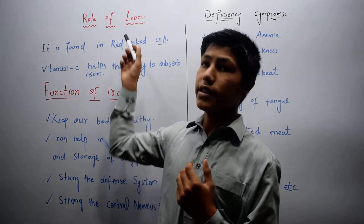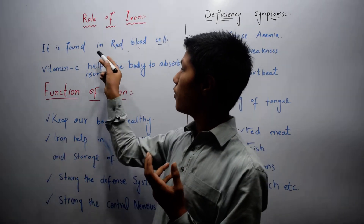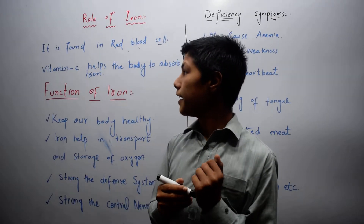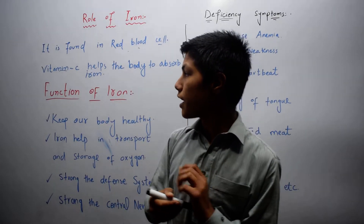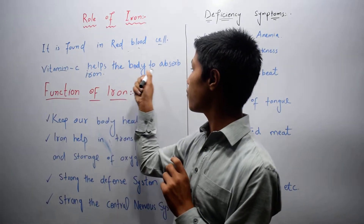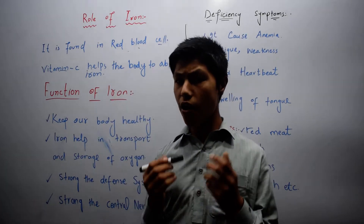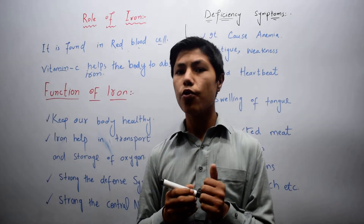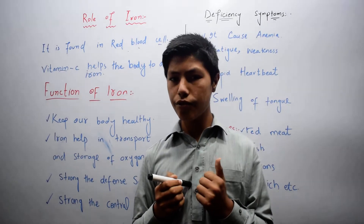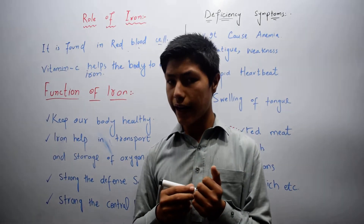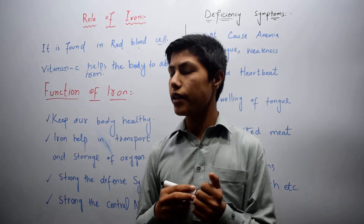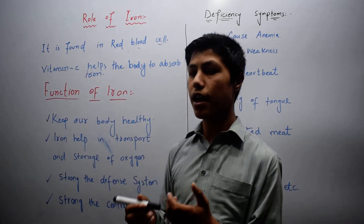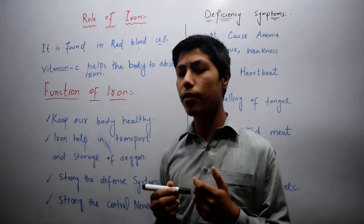Iron is basically a mineral which is found in red blood cells, and vitamin C helps the body to absorb iron. When we eat food, the food contains iron, and vitamin C helps the body to absorb this iron from food.